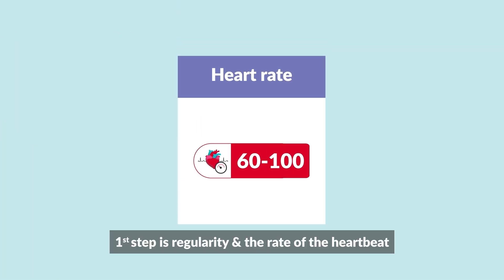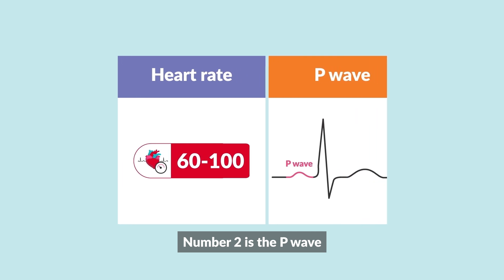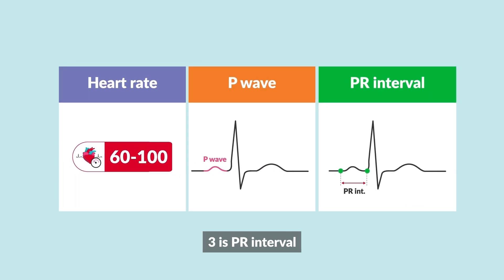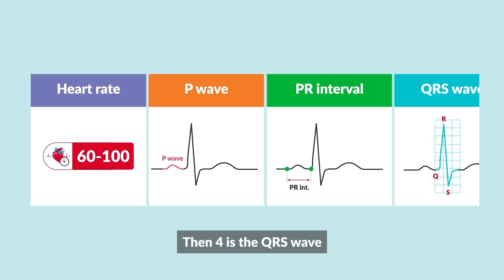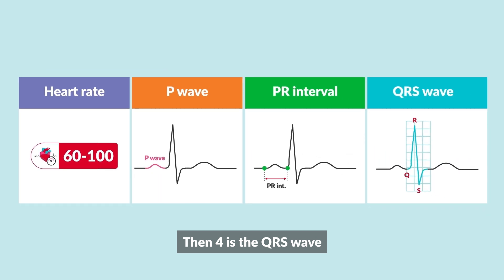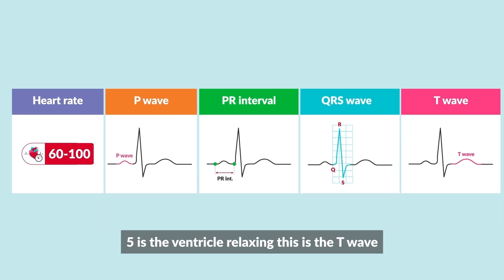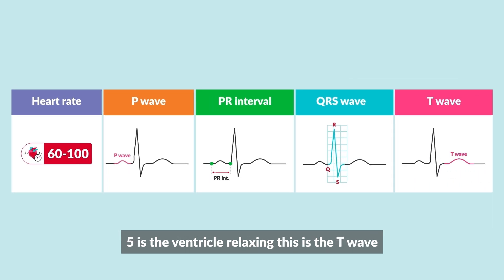First step is regularity and the rate of the heartbeat. Number two is the P wave. Three is the PR interval. Then four is the QRS wave — the QRS wave — width is two to three boxes. Five is the ventricles relaxing: this is the T wave.